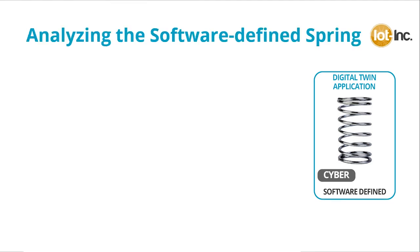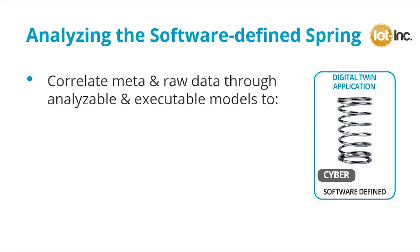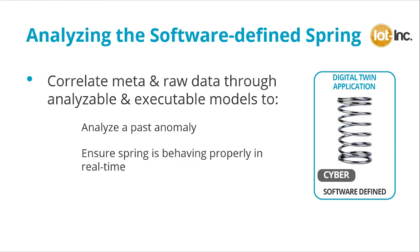In all cases we are correlating the meta and raw data through an analyzable and executable model. We can look into the past by analyzing past anomalies — what happened. We can look into the present, ensuring the spring is operating properly in real time. And looking into the future, we could analyze it based on past performances of similar springs to make predictions as to when the spring may crack or stop working properly.